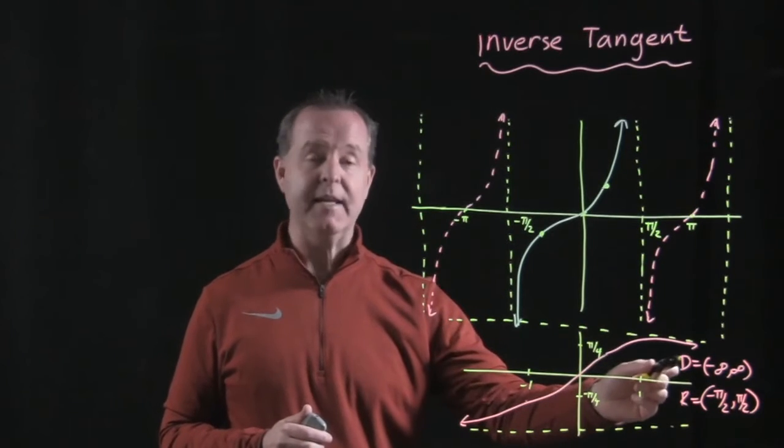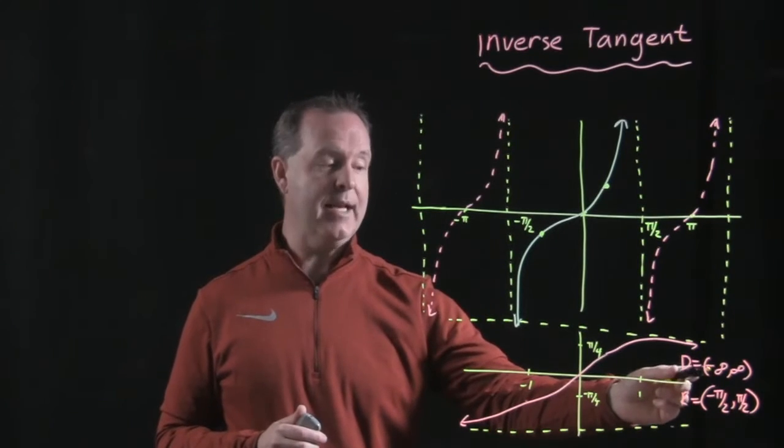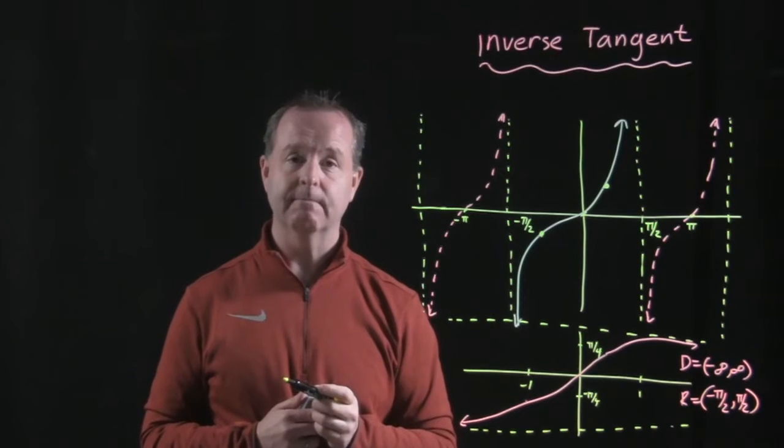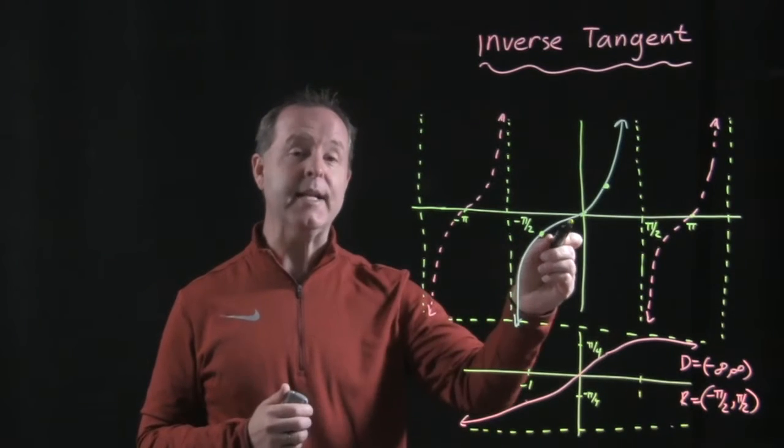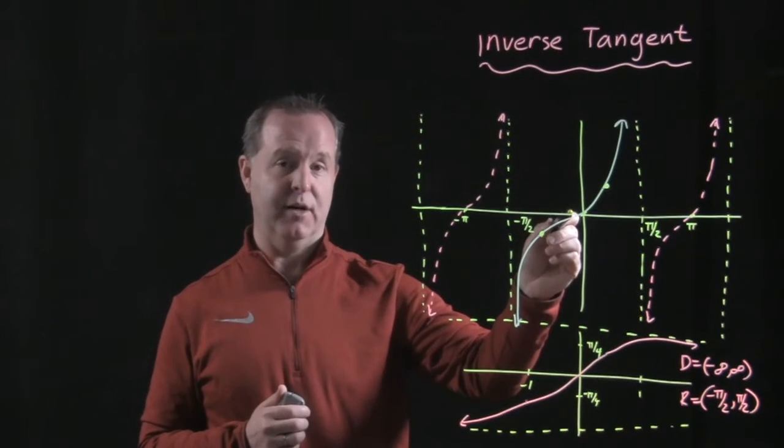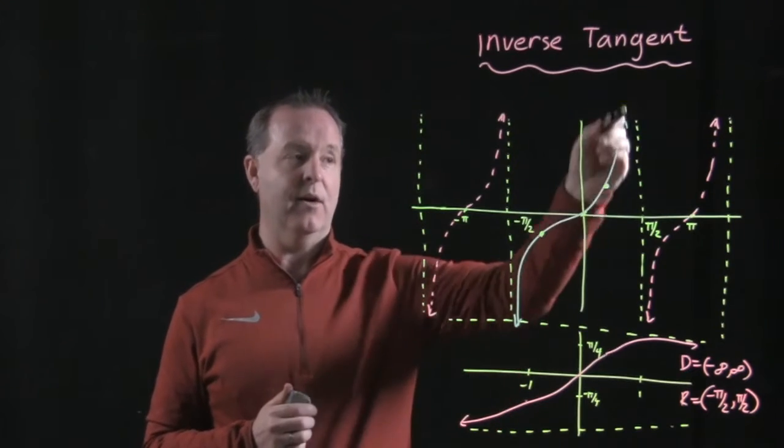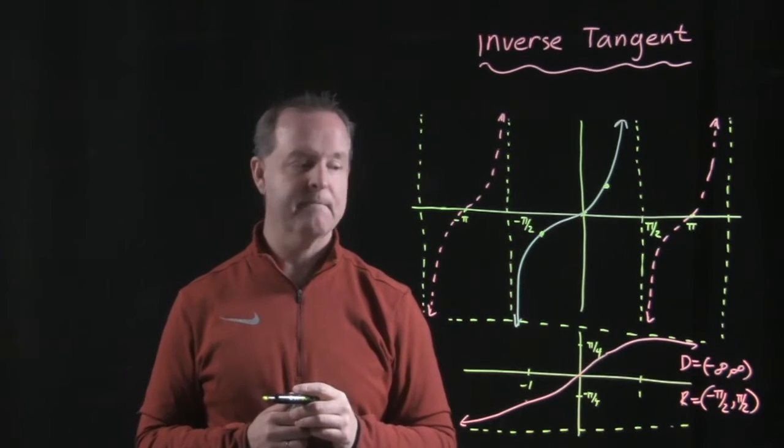The domain of the inverse is from negative infinity to positive infinity. That makes sense, because the range of the regular tangent function is from negative infinity all the way up to positive infinity.